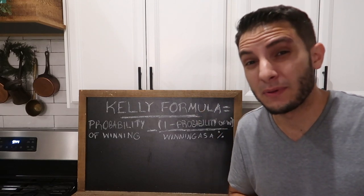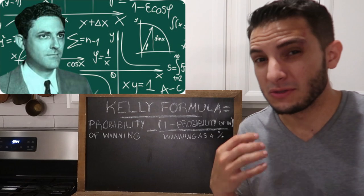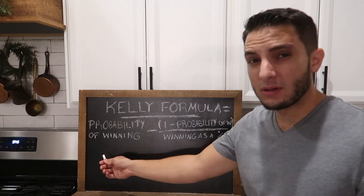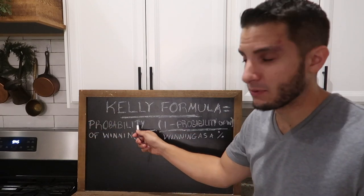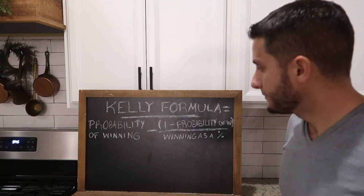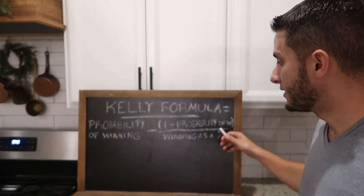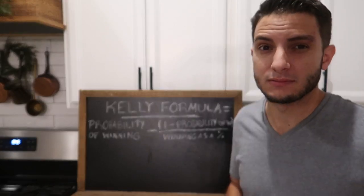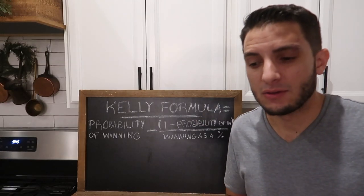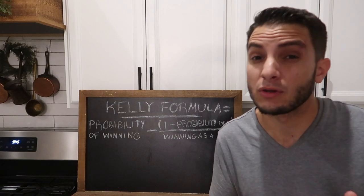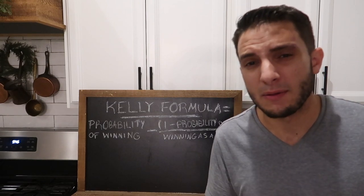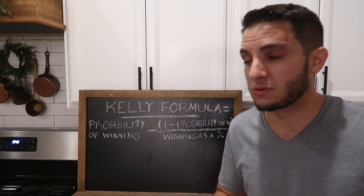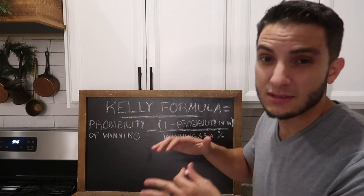The Kelly Formula was developed by a man named John Kelly, who never actually got to use it — he passed away kind of young. The formula works like this: we take our probability of winning, minus one minus the probability of winning, divided by winning as a percentage. This really comes down to being able to evaluate a stock. The formula protects you from yourself — humans are very emotional creatures, so this removes the emotion from investing and puts it into mathematics.